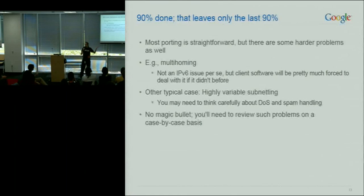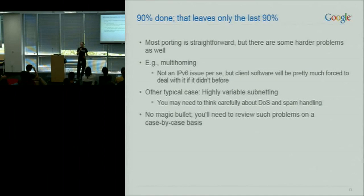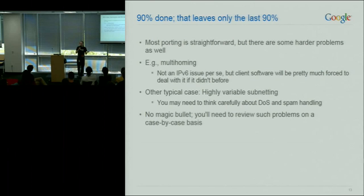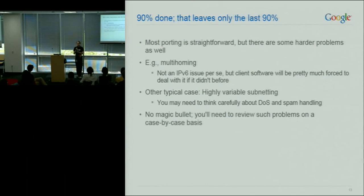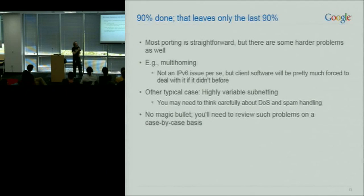The obvious battle plan: there are a few problems remaining. Multi-homing is not an IPv6 problem per se, but now almost everyone will have both IPv4 and IPv6 addresses, so you'll need to deal with it. The other issue is that the address space is much larger — your typical spammer or DoS attacker will have lots of address space. You can no longer store one bit per /24. Generally, IPv6 porting is easy, but it's not trivial. Multi-homing and security are your difficult parts.